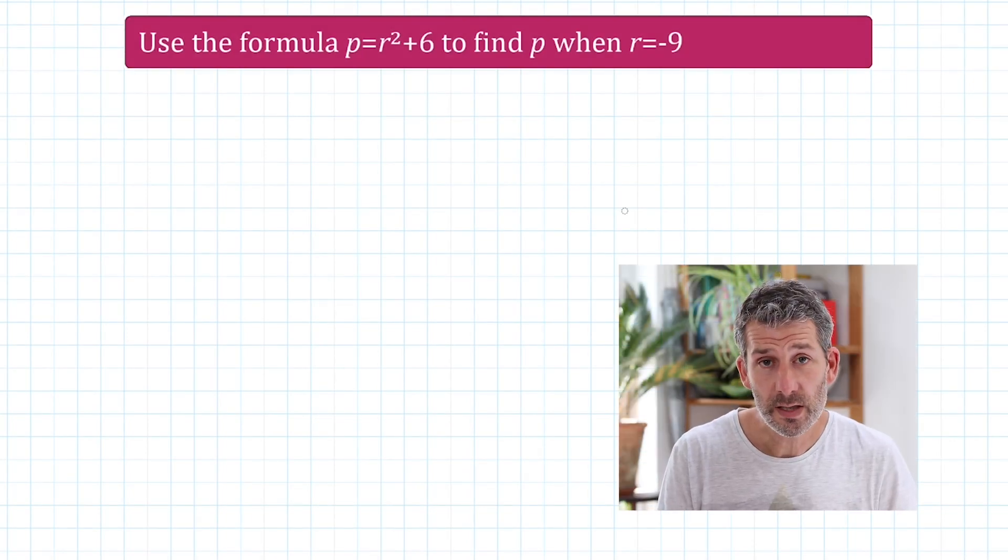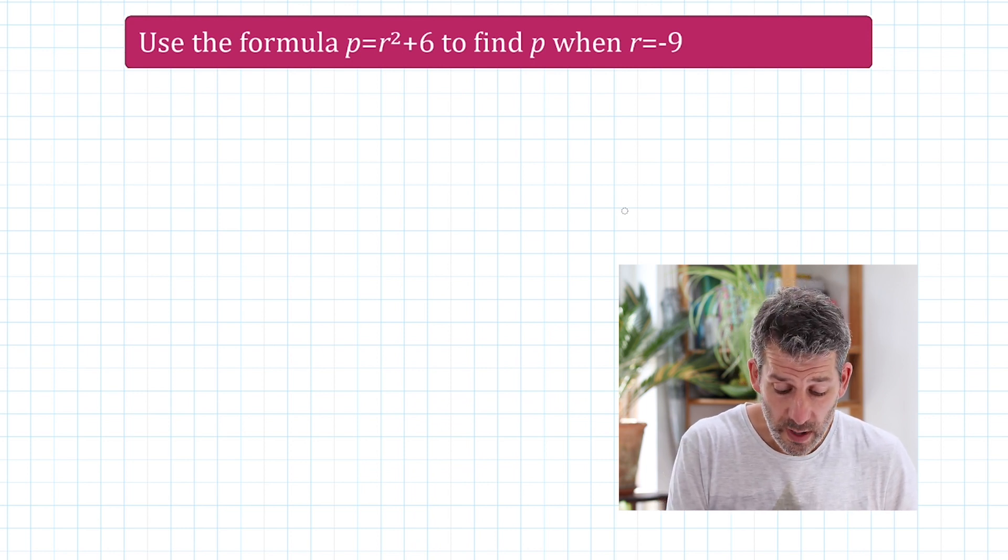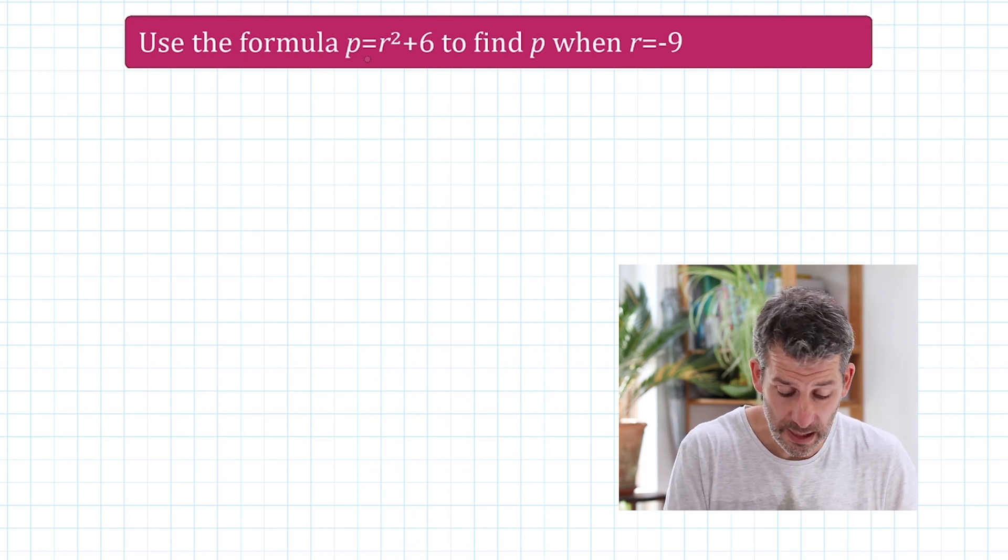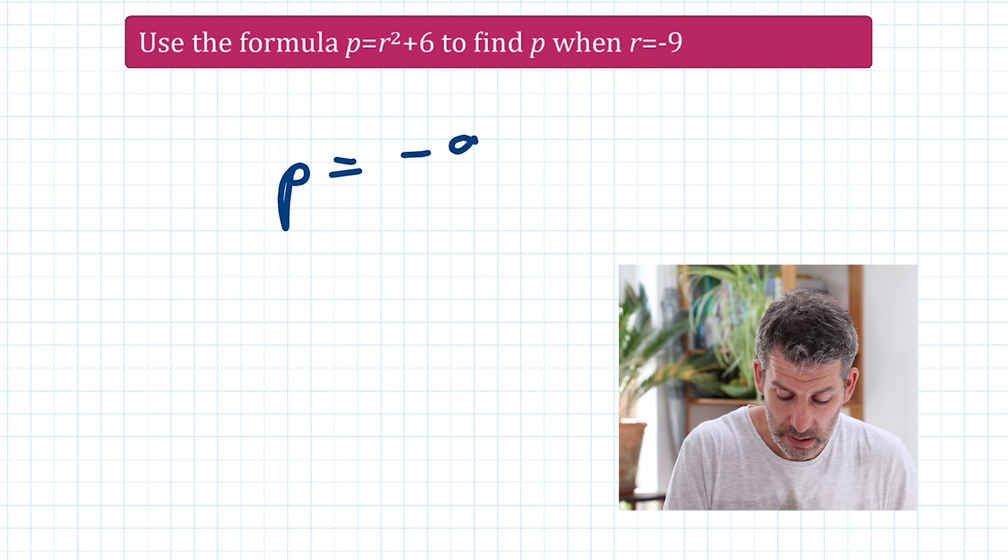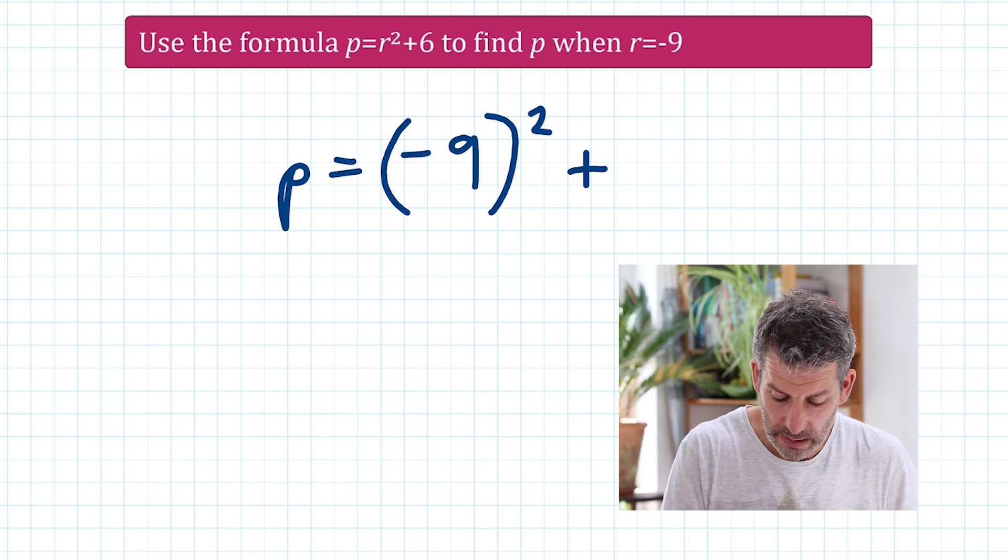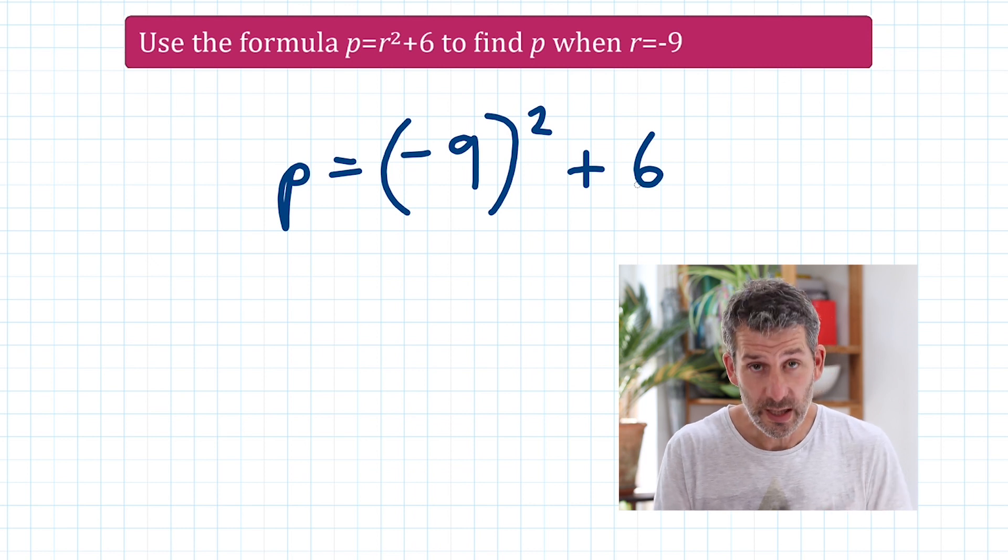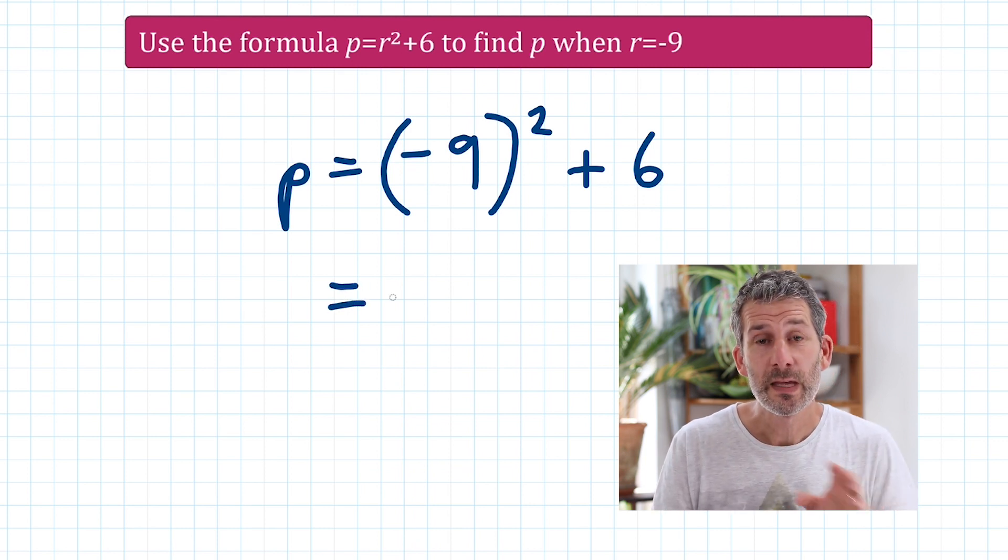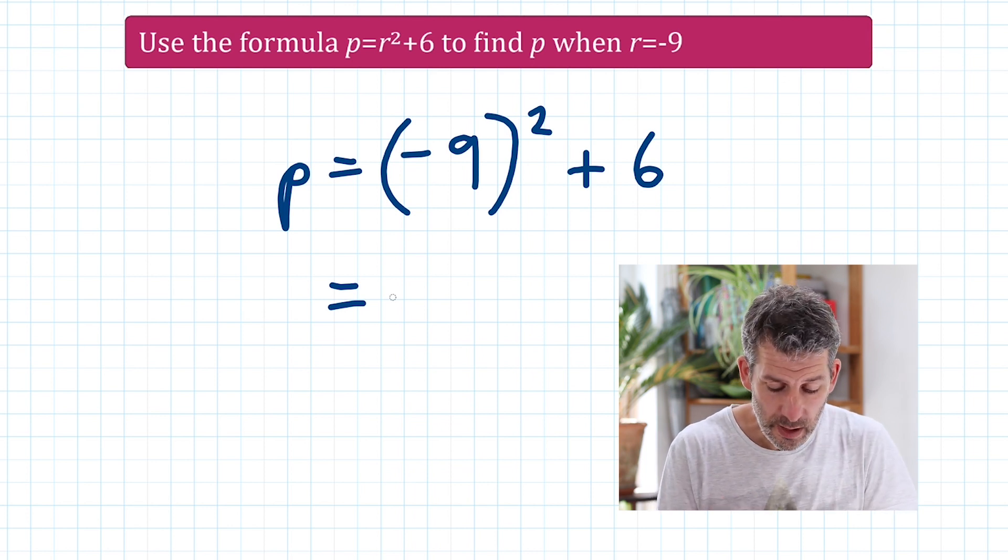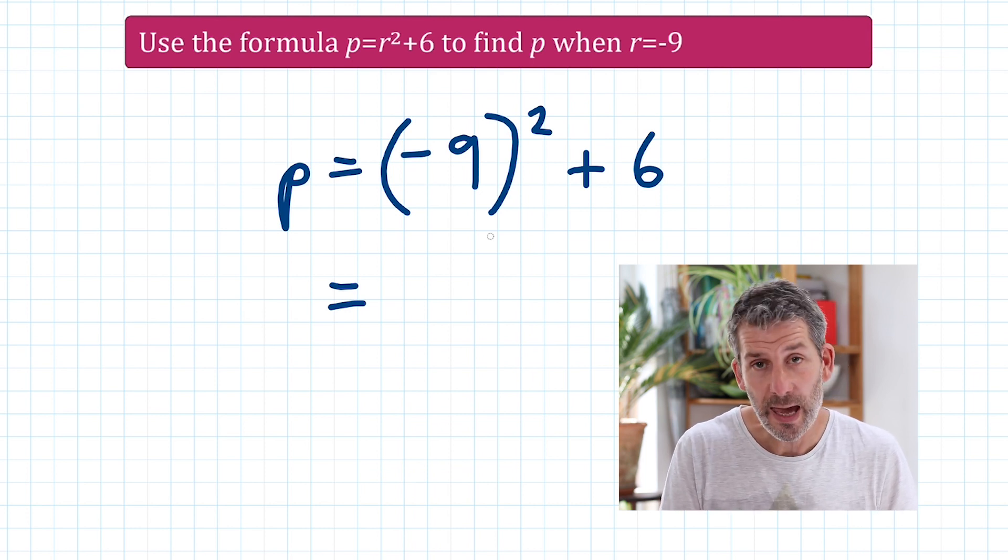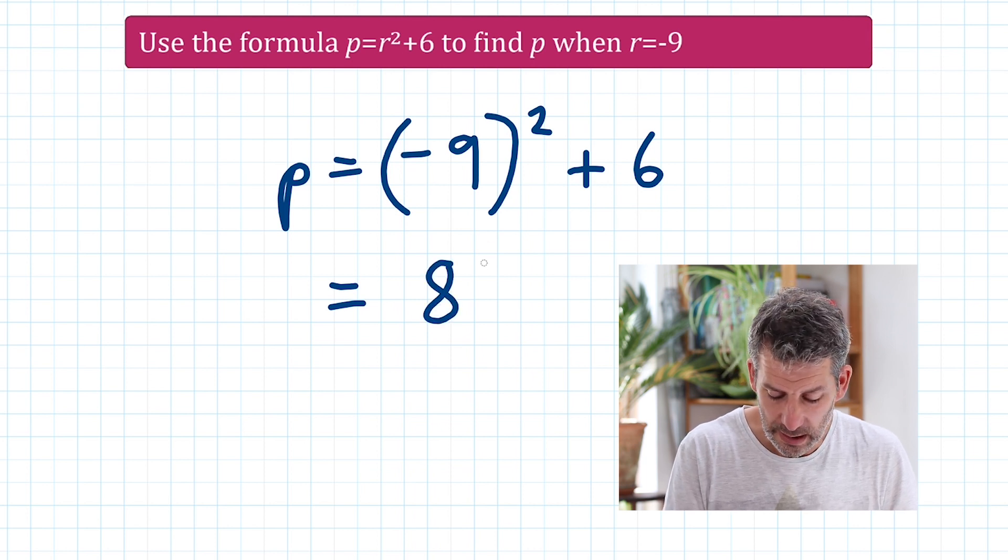Use the formula P equals R squared plus 6 to find P when R equals negative 9. Okay, so all we have to do is rewrite the formula, but instead of using R, we're going to use negative 9 because they're telling us that R is equal to negative 9. So P is equal to negative 9 squared. I'm just going to put that in brackets there. You don't have to do that, but it's good practice, I would say. Add 6. If ever you're squaring a negative using a calculator, you do need to put it in brackets like that. Okay, so what is negative 9 squared? That's the question. Well, it's negative 9 times negative 9. So we're multiplying two negative numbers together. We know that that's going to give us a positive answer. So it's 81, positive 81. And then I have to add 6. So 81 adds 6, and that gives me 87.